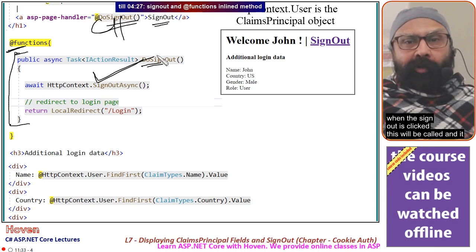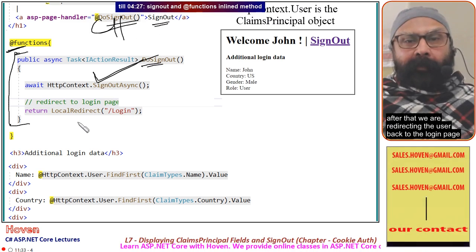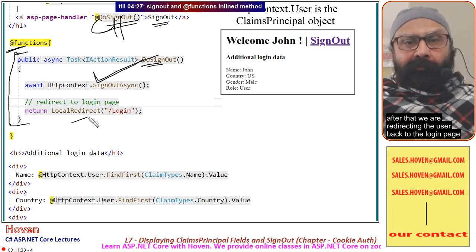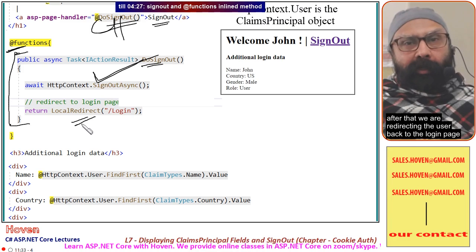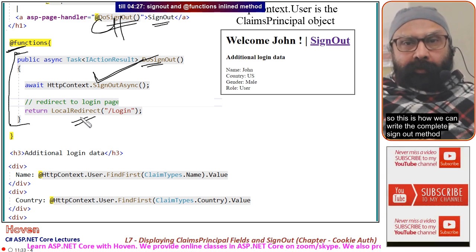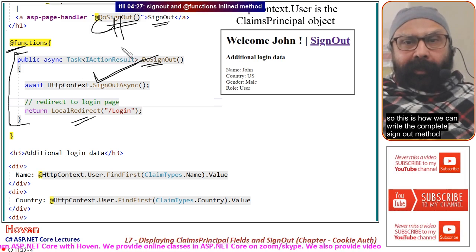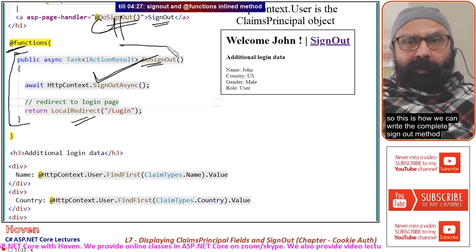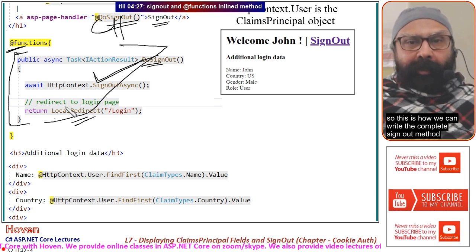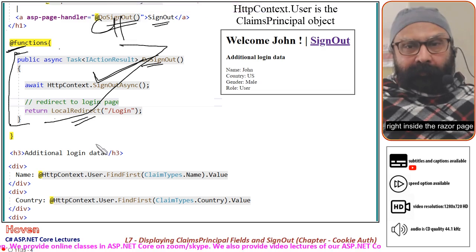We have written the function public async Task DoSignOut. When the sign-out link is clicked, this method is called and it signs out the user. After that, we redirect the user back to the login page. This is how we write the complete sign-out method right inside the Razor page.